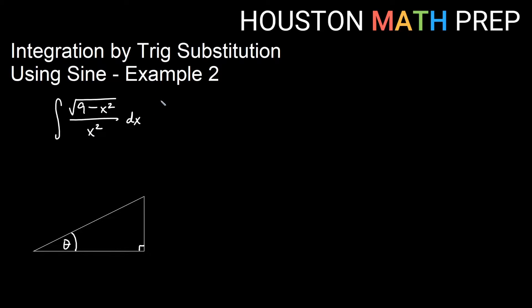If you look at this 9 minus x squared statement, notice you can't really split up the root because it's separate terms and there's no way to do u substitution. You might see this as a statement that looks like a squared minus u squared, and that would tell you that this is a sine substitution.